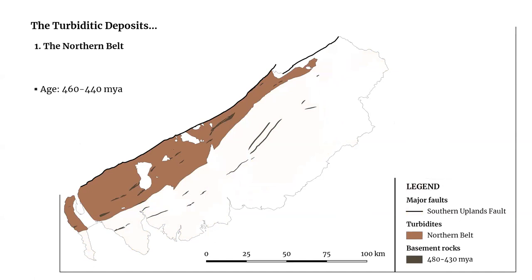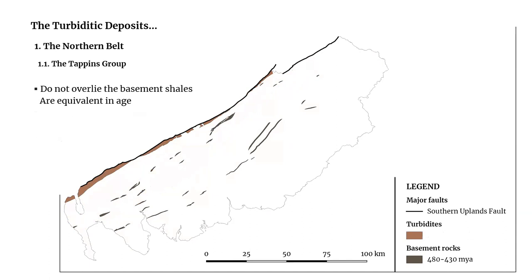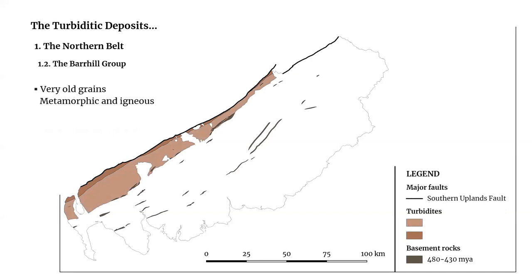The northern belt comprises the oldest turbiditic sediments, deposited about 460 to 440 million years ago. This belt corresponds to the Leitholm Supergroup, and its lithology is largely dominated by greywacke sandstones. The oldest turbidites in the northern belt are the only ones that do not overlie the basement shales, but are considered equivalents of them. The source of these turbidites has been in part the ophiolites of the Ballantrae complex of the Midland Valley.